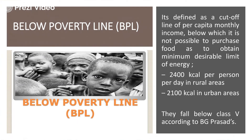Let us try to understand the below poverty line category in India. It is defined as a cut-off line of per capita monthly income below which it is not possible to purchase food and obtain the minimum desirable limit of energy. The minimum desirable limit of energy is 2400 kcal per person per day in rural areas and 2100 kcal in urban areas. This is the official definition for people living below the poverty line. If they are not able to afford food meeting these minimum calorie thresholds, they are categorized as BPL and fall below Class 5 according to BG Prasad's category.